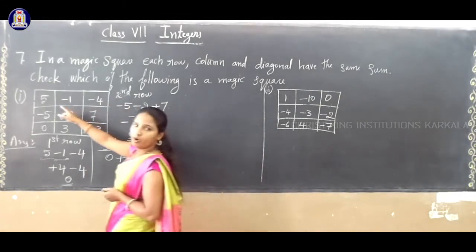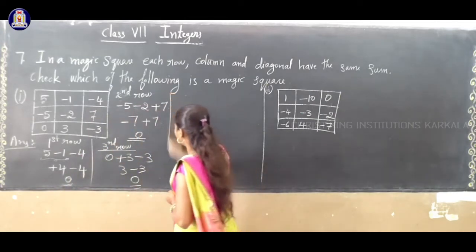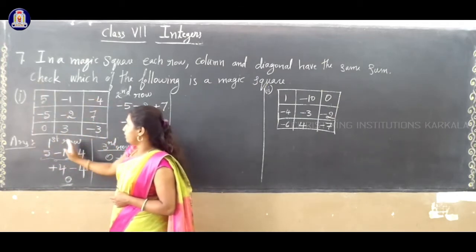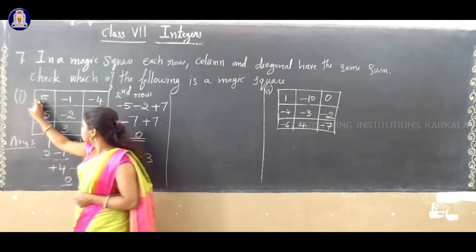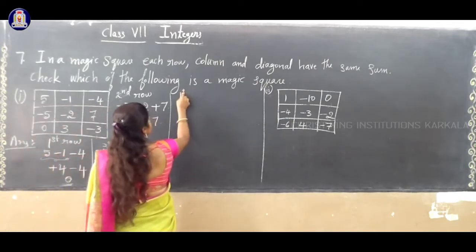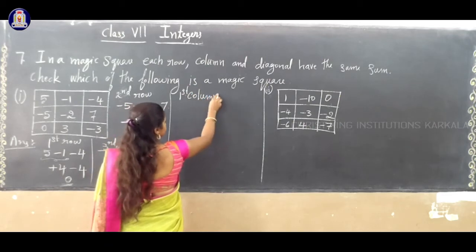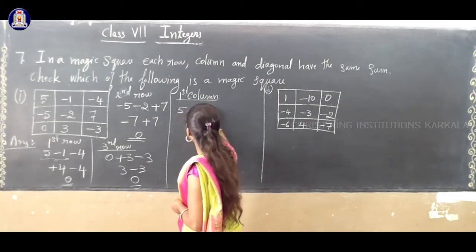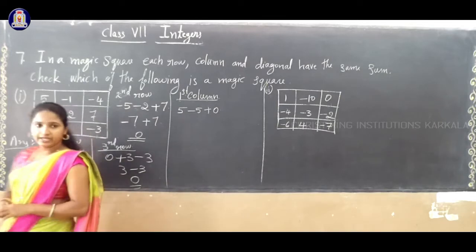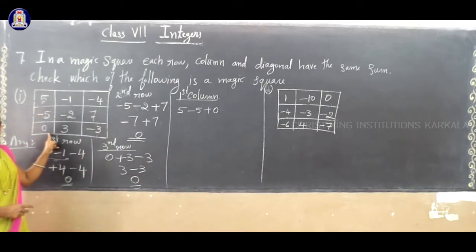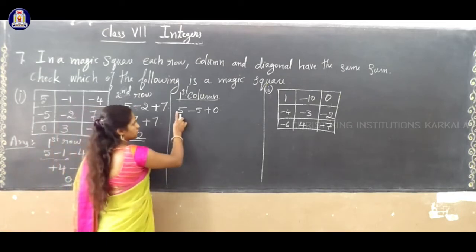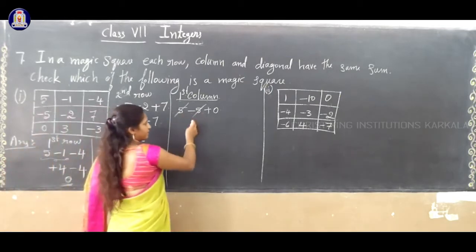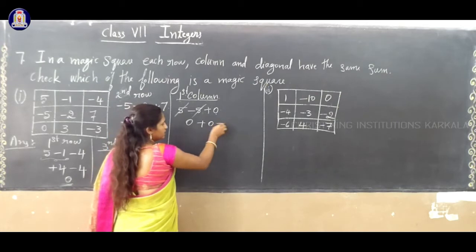Next, you have to check each column. First column numbers are 5, minus 5, plus 0. Plus 5 minus 5 cancel, giving 0, then 0 plus 0 is 0. So, the first column sum is 0.